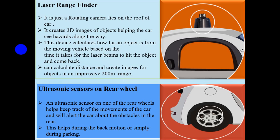Ultrasonic Sensors on Rear Wheel. An ultrasonic sensor on one of the rear wheels helps keep track of the movements of the car and alerts the car about obstacles in the rear. It is mostly used for detecting rear obstacles and helps during reverse motion or simply during parking.